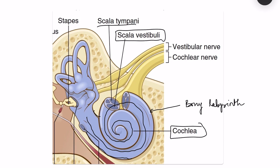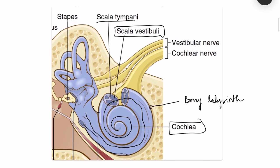There are two membranes. The top membrane is known as Reissner's membrane, and then there is a bottom membrane — the basilar membrane. It is these two membranes which divide the cochlea into three parts. The top part, bounded below by Reissner's membrane, is the scala vestibuli.